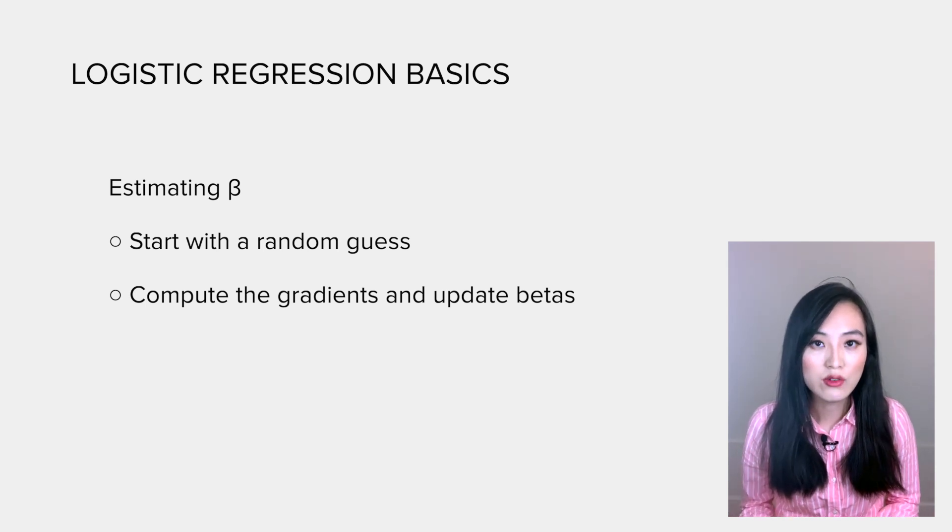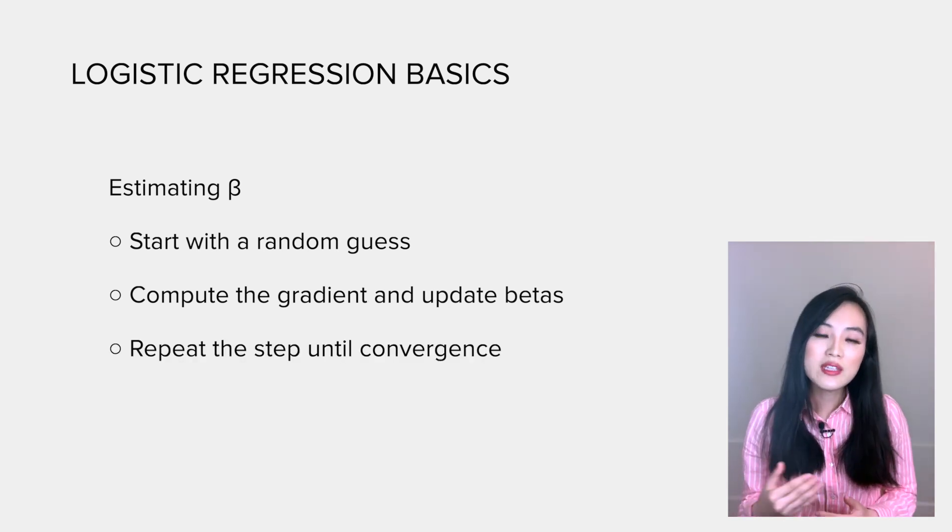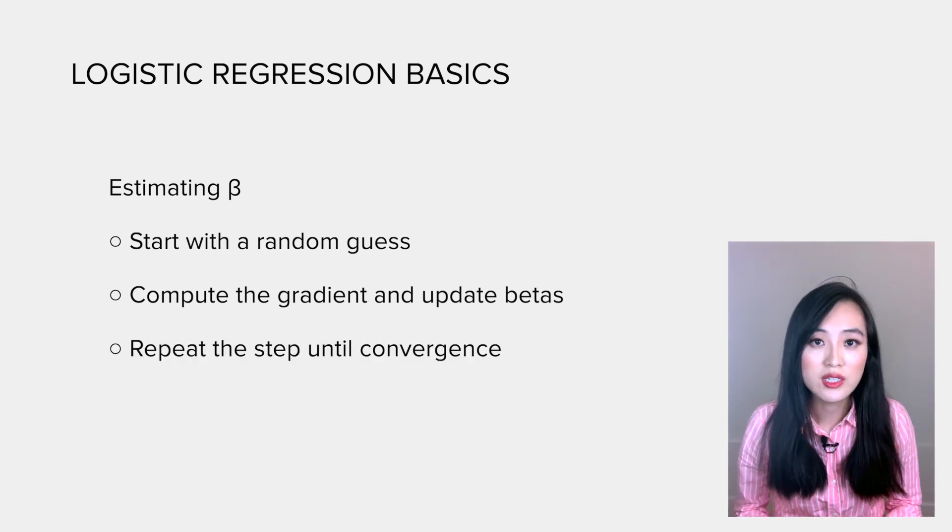A gradient at a particular parameter is a partial derivative of the loss function with respect to that parameter. We repeat this step until the loss reaches the minimum value. In other words, the loss converges.